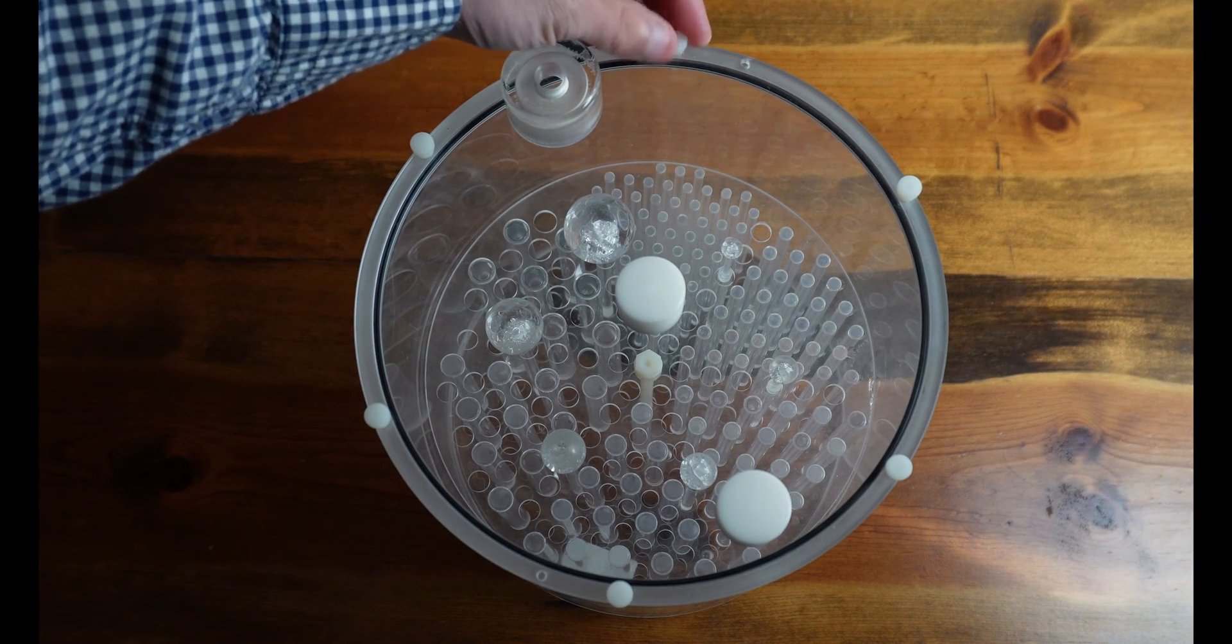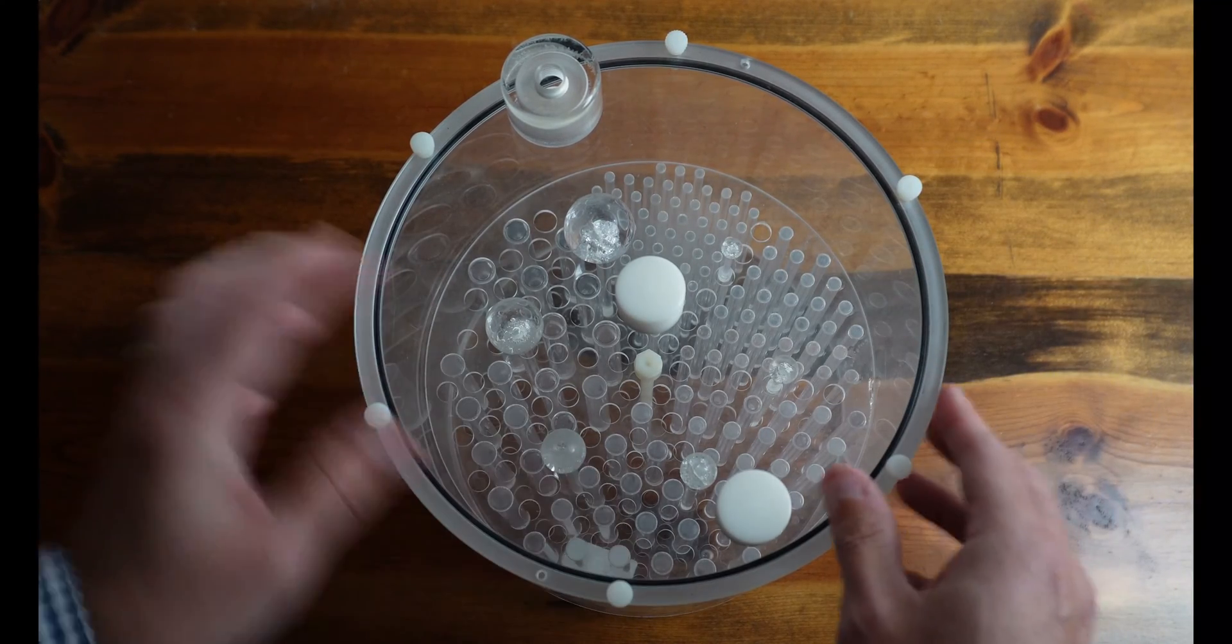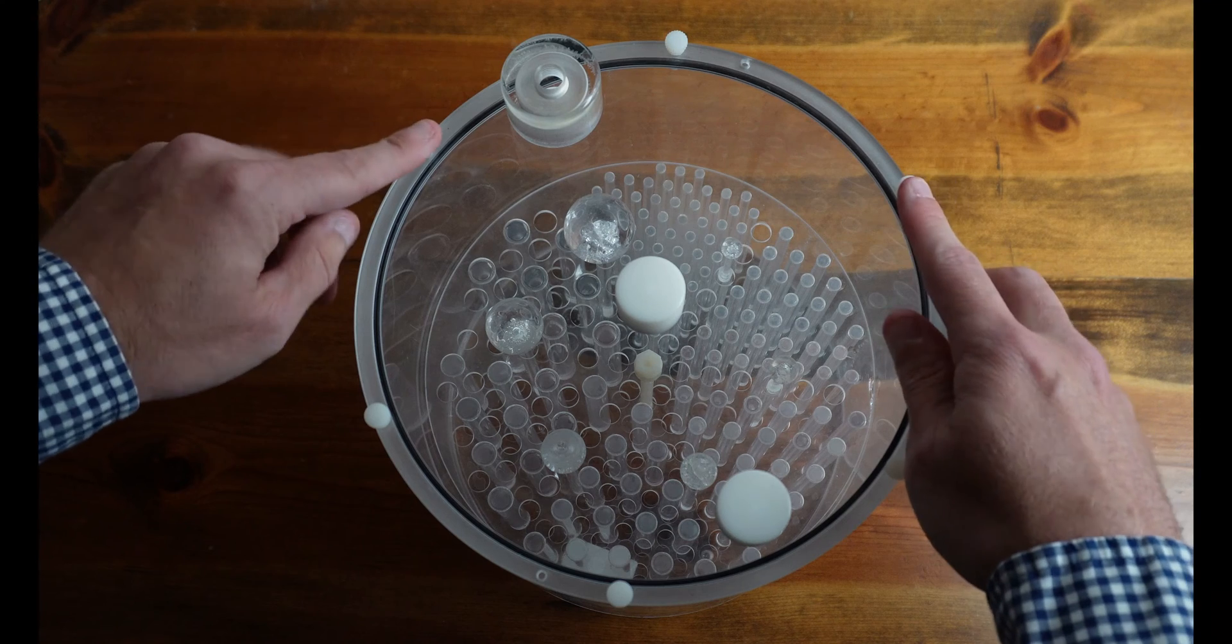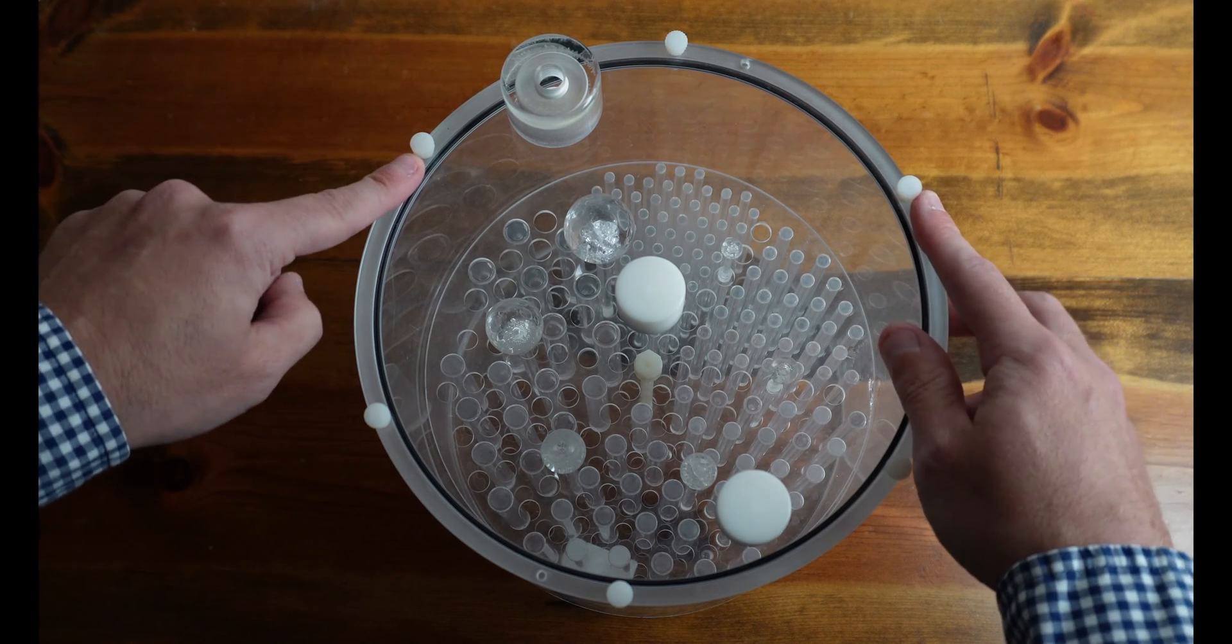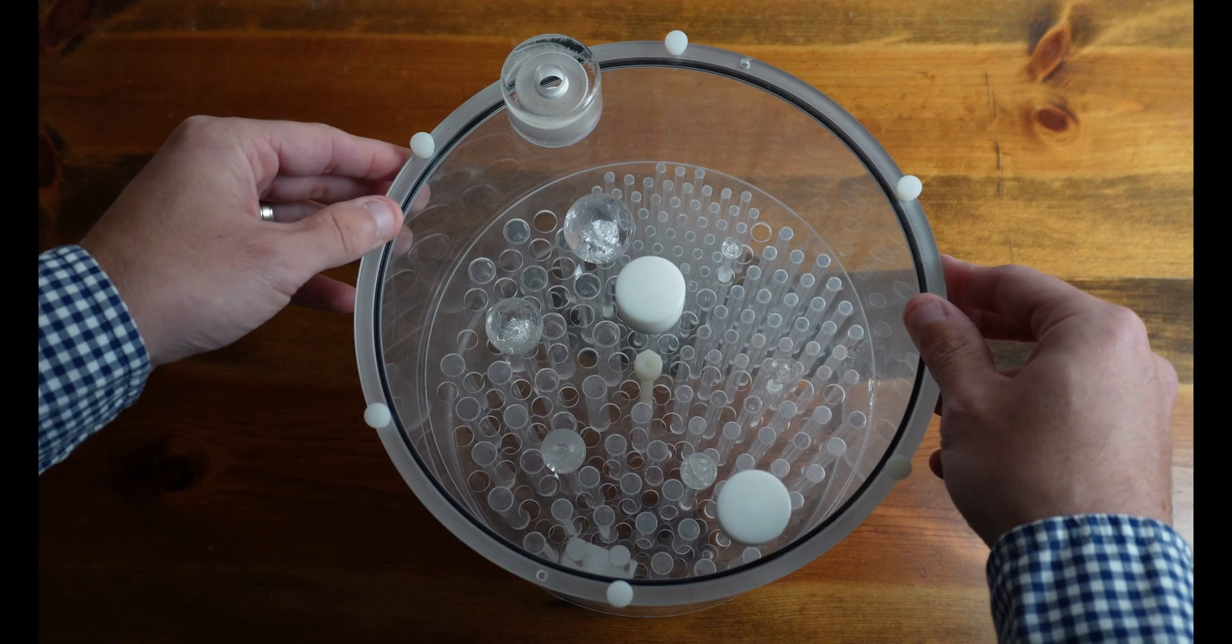Tightening up the last screw here. So we want to make sure that the lid is seated well. We don't want to over-tighten the nylon screws because we could snap them. We don't want to do that. But we do want it to be a nice, snug fit.